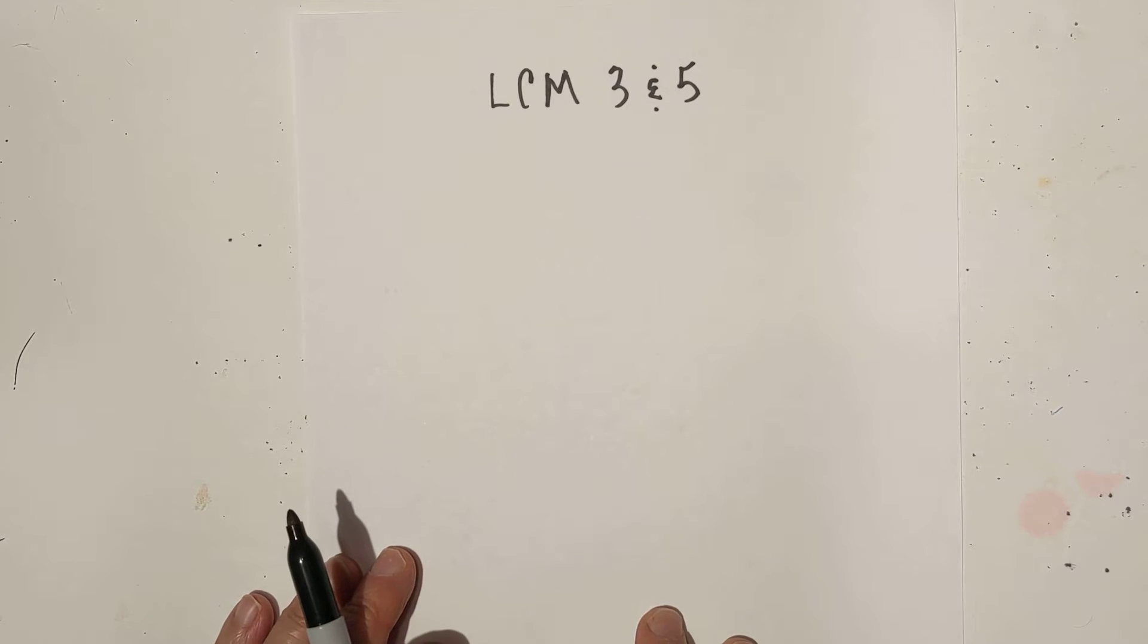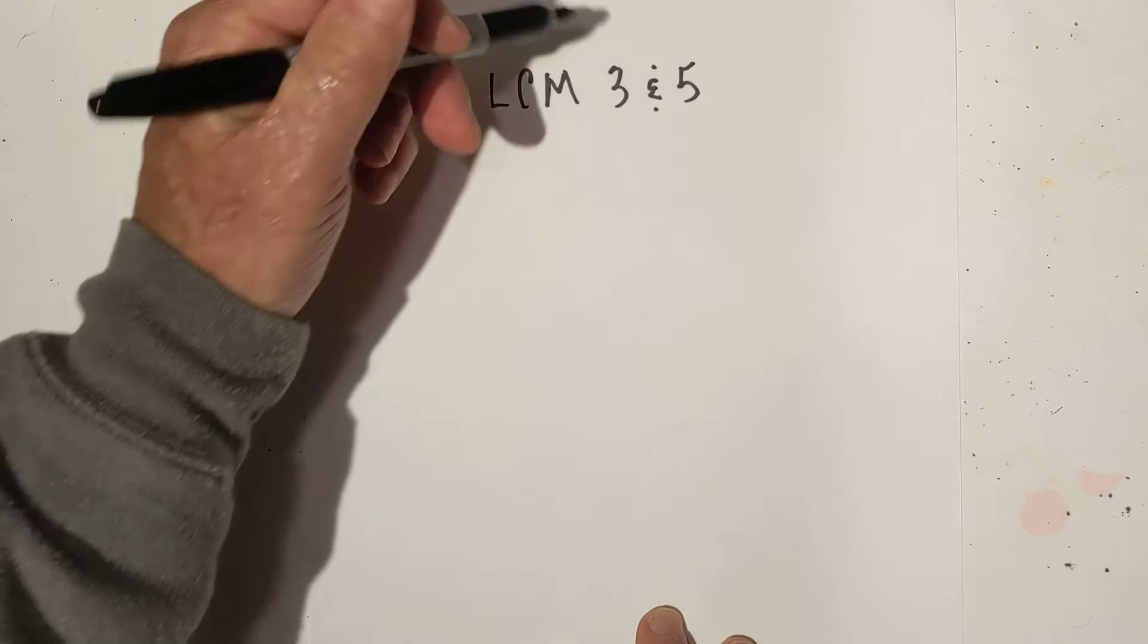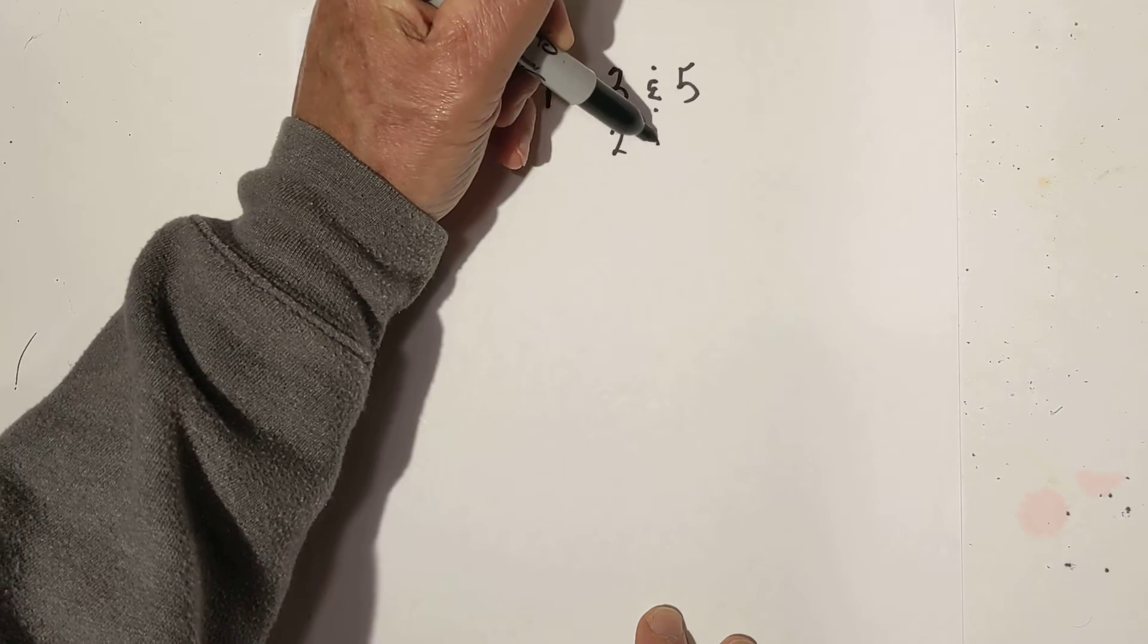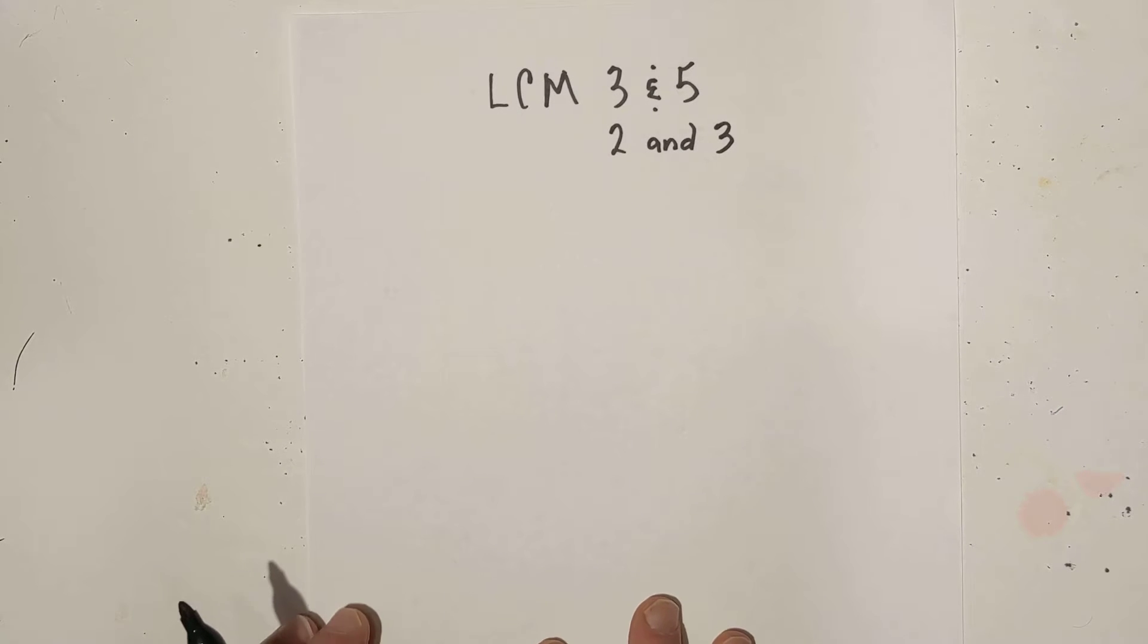Welcome to MooMooMath and Science. In this video let's find the LCM of 3 and 5 and then we're also going to do 2 and 3. In both of these we have prime numbers and I think you'll see that it's pretty easy.